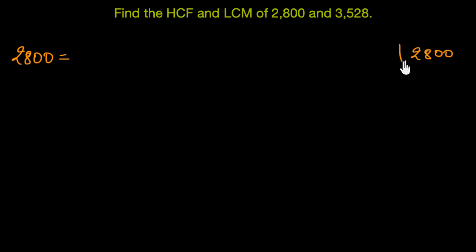2,800 on dividing this by two, we would get 1,400. This prime factorization would take some time. And if you already know how to do this, you can just do this on your own and directly jump to that part of the video where we directly calculate HCF and LCM using the prime factorized form of the given numbers. Now, coming back to this, 1,400 divided by 2 would again give us 700. 700 divided by 2 would give us 350. 350 divided by 2 would give us 175.